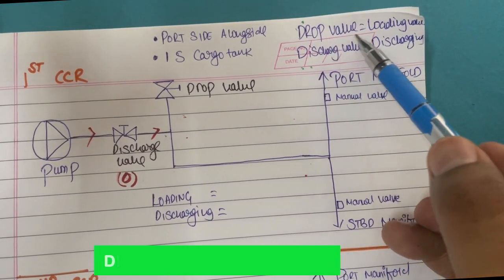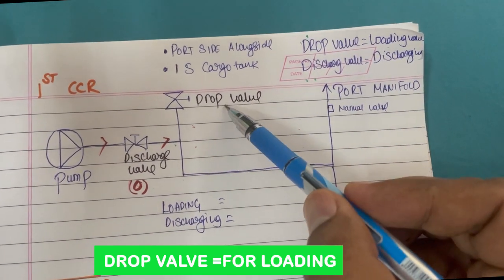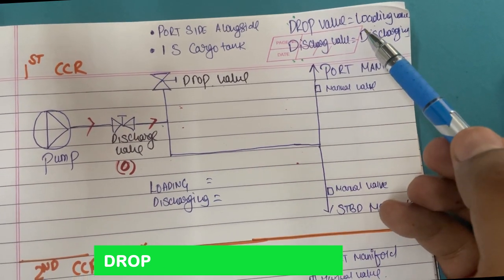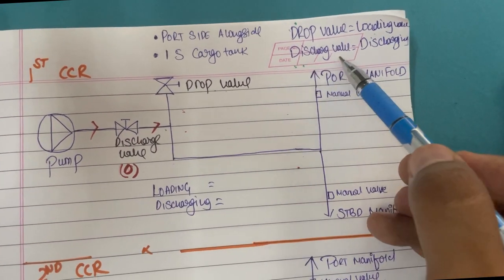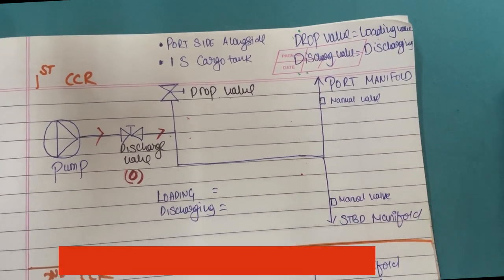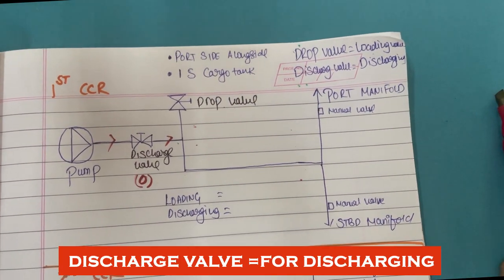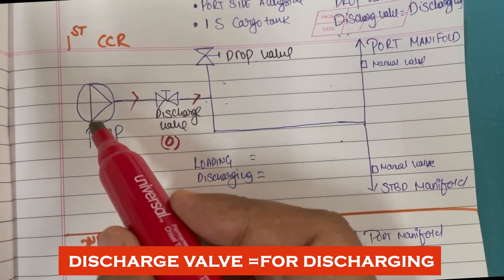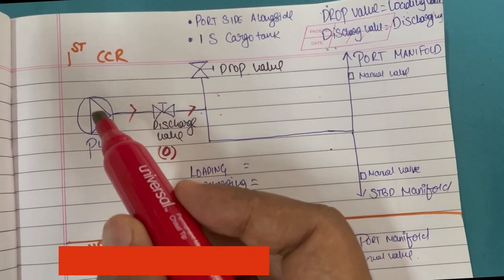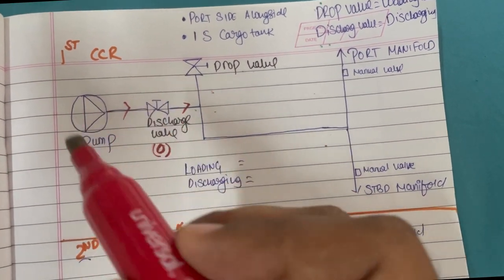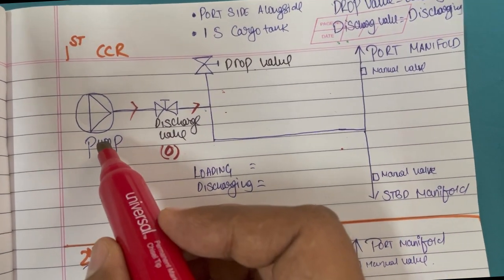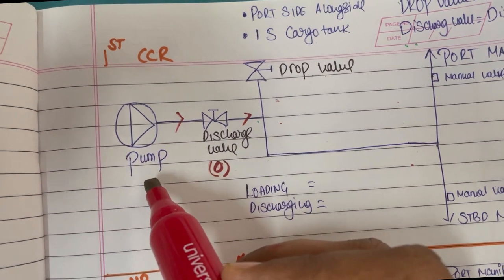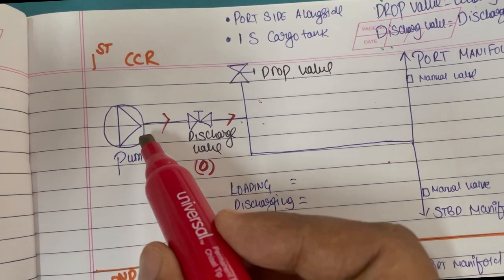The drop valve is the loading valve — the valve used to load. The discharge valve is for discharging. Whenever you see this symbol, that means it is a pump. So let us assume we are discharging from this particular CCR panel for one starboard tank.